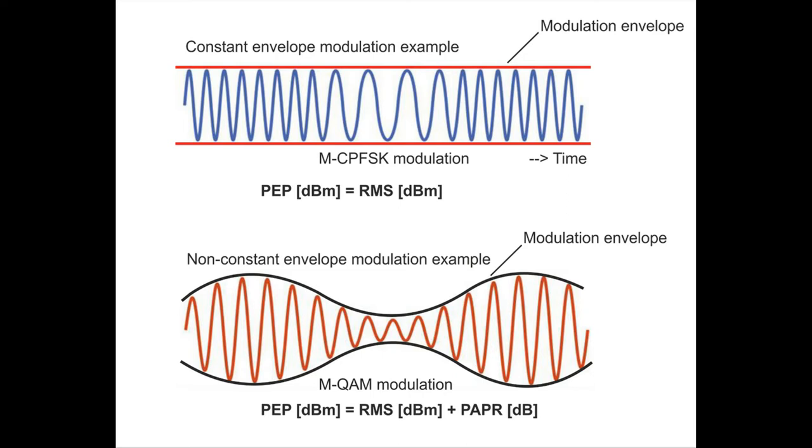The reason, if we go into more details, is that modern wireless signals have very high peak to average power ratio. Peak to average power ratio is a parameter which is used to characterize the dynamic range of an amplitude modulated signal.